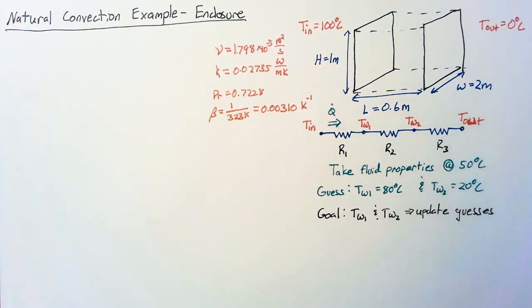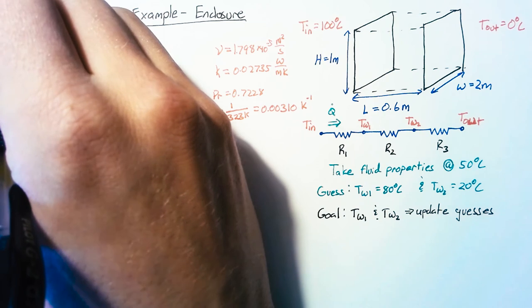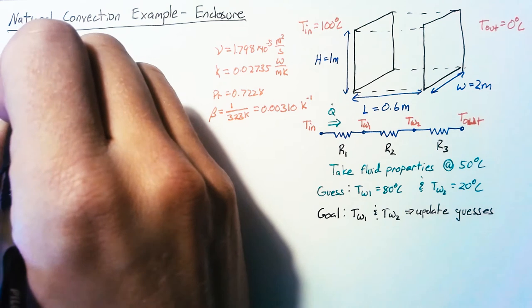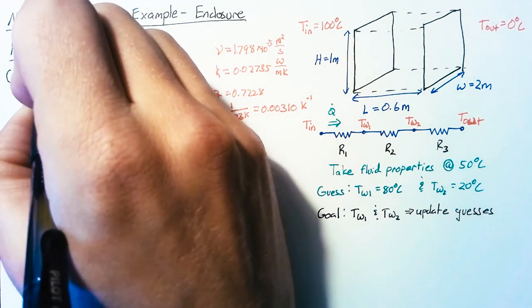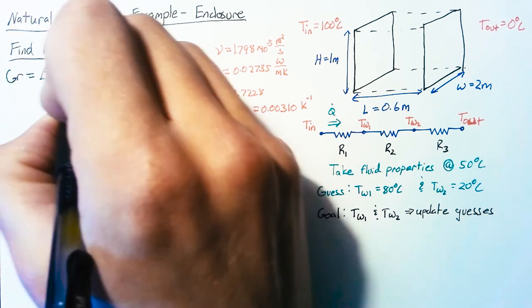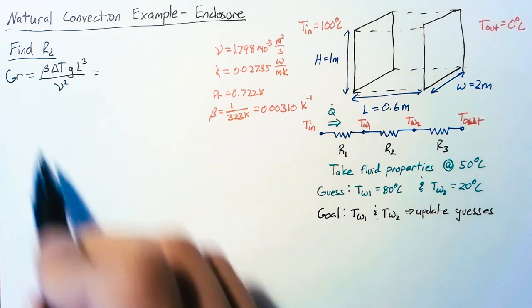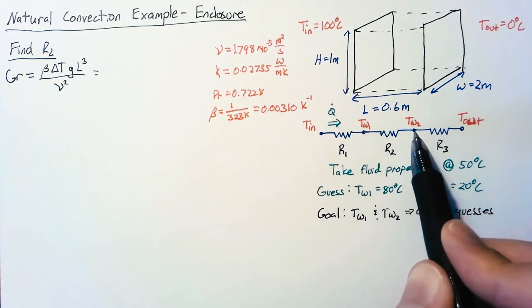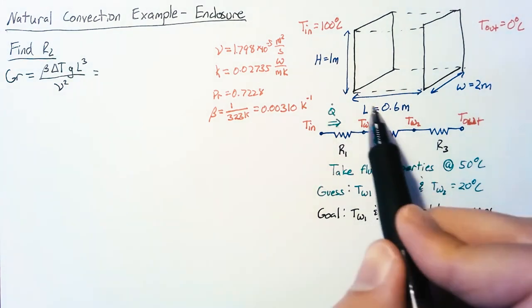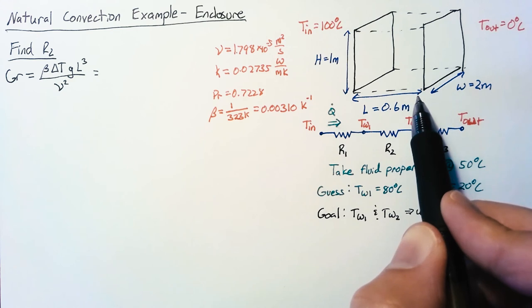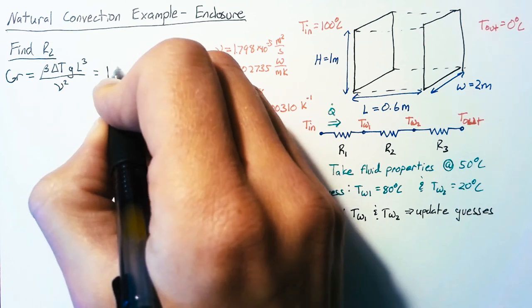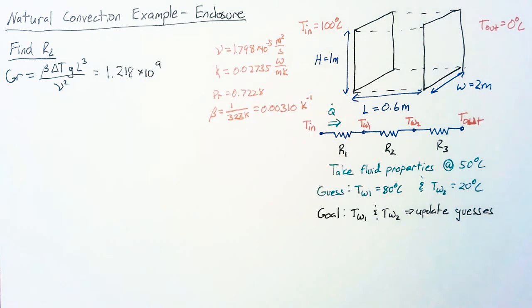So with those in hand we can go ahead and start calculating our resistances. So let's start off with R2. As always we're going to start by calculating the Grashof number and we know that the Grashof number is just beta times delta T times gravity times L cubed all over nu squared. Delta T for this problem comes from the change in temperature between our two walls and so the delta T here is going to be 60 degrees. The L value, our characteristic length for an enclosure, is the distance between the plates and so that will be our 0.6. Everything else should be straightforward and the value that we end up with here is 1.218 times 10 to the ninth.